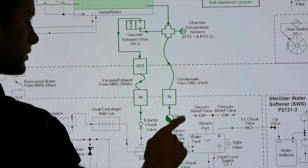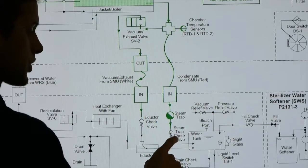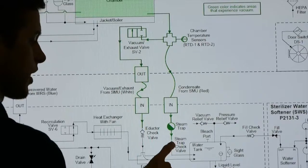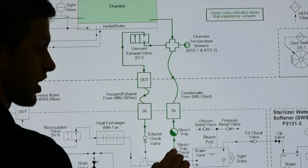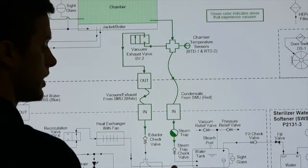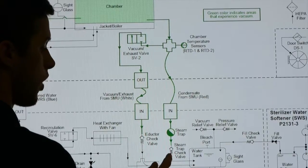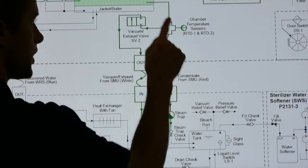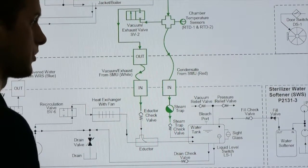Over here, the steam trap also has a check valve. So the steam trap check valve, if it wasn't sealing off, if it was plugged open, it could let water in from the water tank through this into the chamber and you wouldn't pass vacuum leak tests.